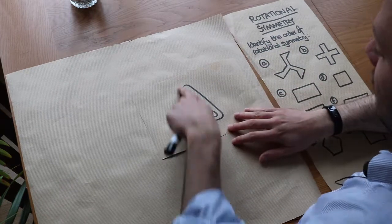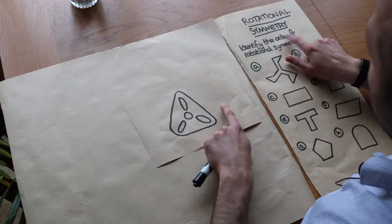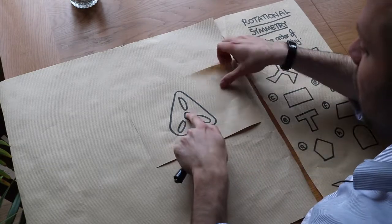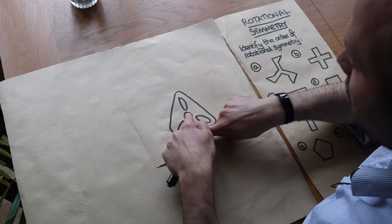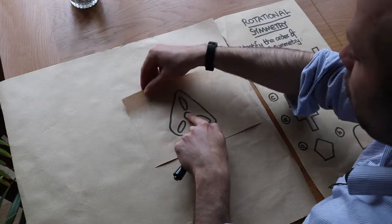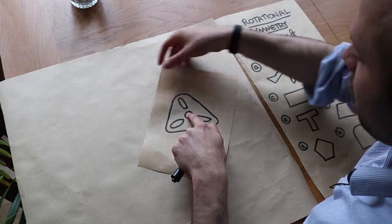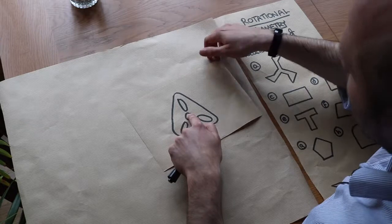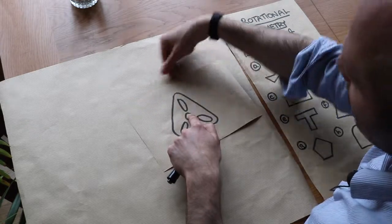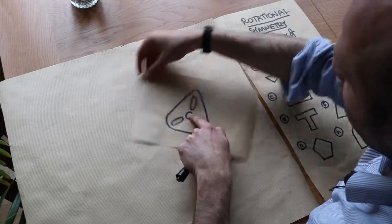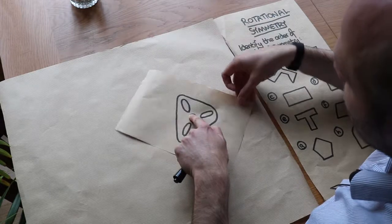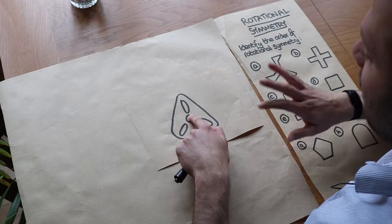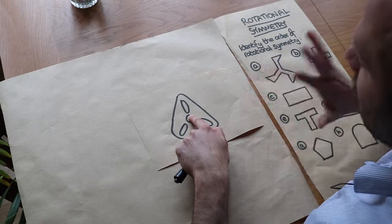We say that this shape has an order of rotational symmetry of three, because if we include the original image we have one, two, three and then we're back to where we started. Another way of thinking about it is the number of times you have to turn the paper before you get back to the start: turn it once, twice, then a third time to get back to the original image. So it has order of rotational symmetry of three.